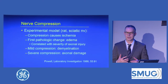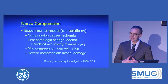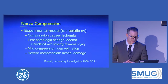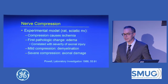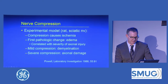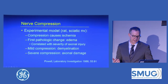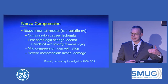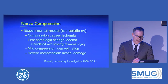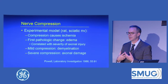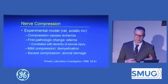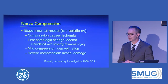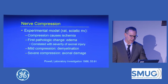So for entrapment syndrome, what are we looking at pathologically? Looking at the rat model — applicable to humans — compression will first cause ischemia of the nerve. The first thing seen in pathology, explaining what we see on ultrasound, is edema, which correlates with the severity of axonal injury. With mild compression you get demyelination, and with severe compression you get axonal damage. There's no inflammation going on; we often use the term neuritis because the nerve is painful.